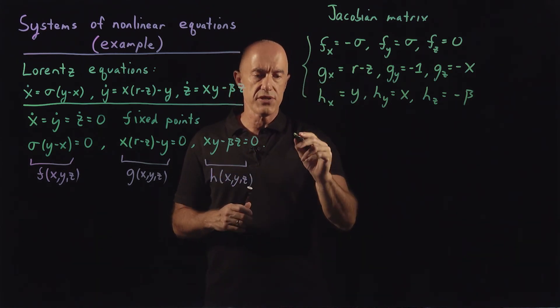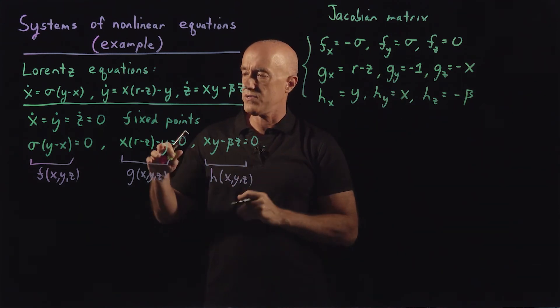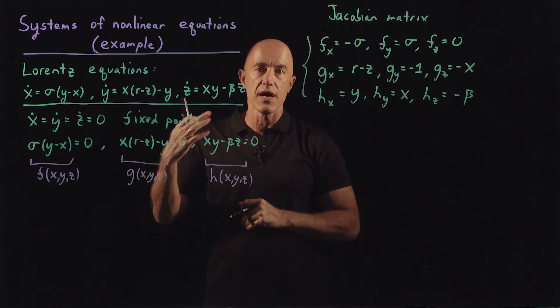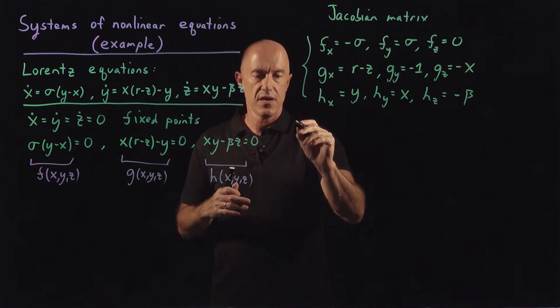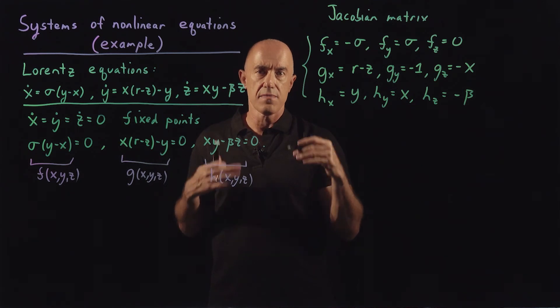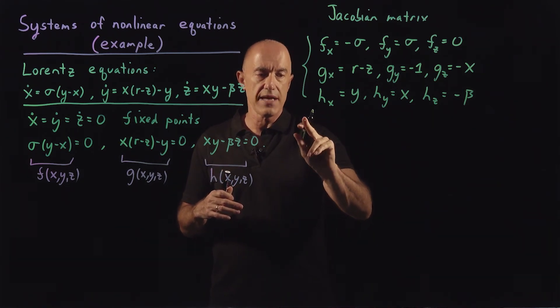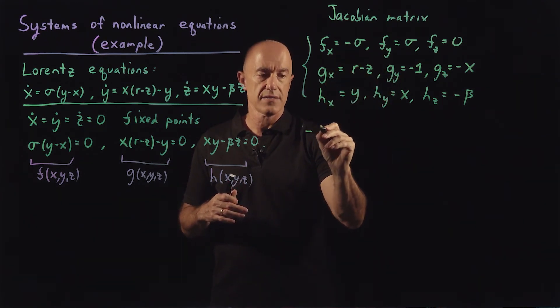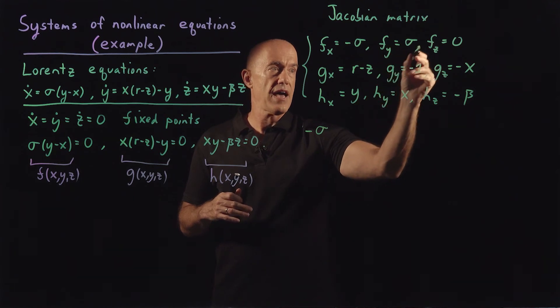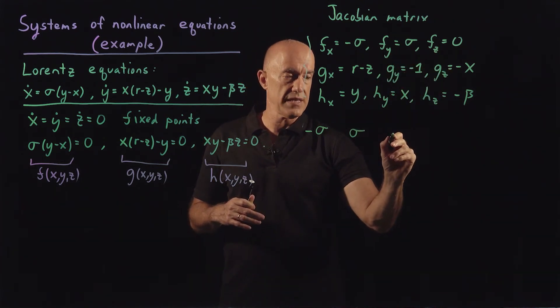So our iteration equation then to find the values at the n+1 stage. Say that we're in the nth stage of the iteration. We'll be solving the matrix equation, which is the Jacobian. So the matrix equation will be f_x, so minus sigma, f_y, sigma, times f_z, zero.